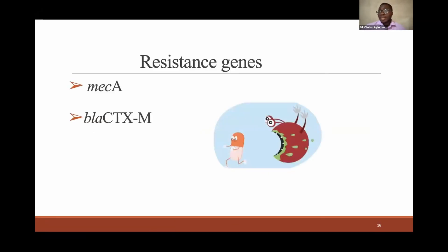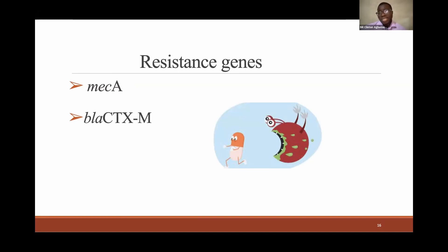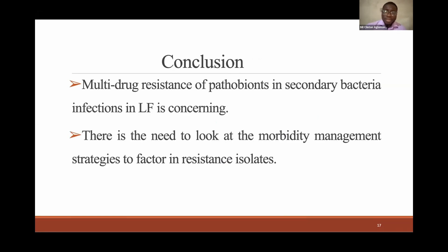Finally, we looked at resistant genes. Looking at objectives one and two, you realize that many organisms are resistant to beta-lactam antibiotics, so it was important to look at resistant genes able to hydrolyze these antibiotics. What we found was that mecA and bla-CTXM — which are very important in beta-lactam resistance — were also found here. This means that these pathogens and secondary bacterial infections in lymphatic filariasis are concerning, because these patients are truly immunocompromised. If we use empirical treatments without researching which antibiotics and organisms are occurring in these populations, we may not be effectively treating secondary infections.